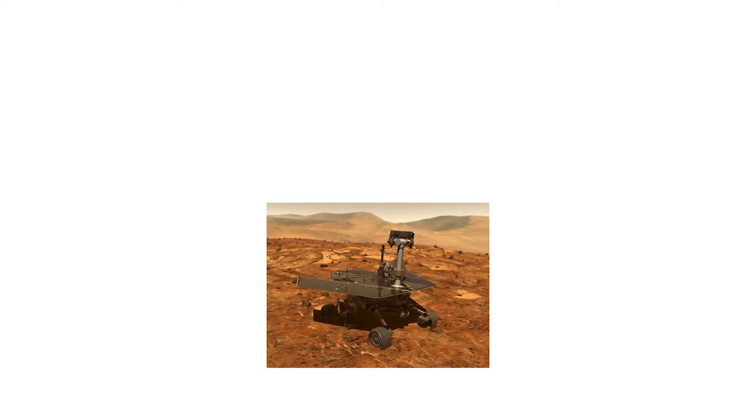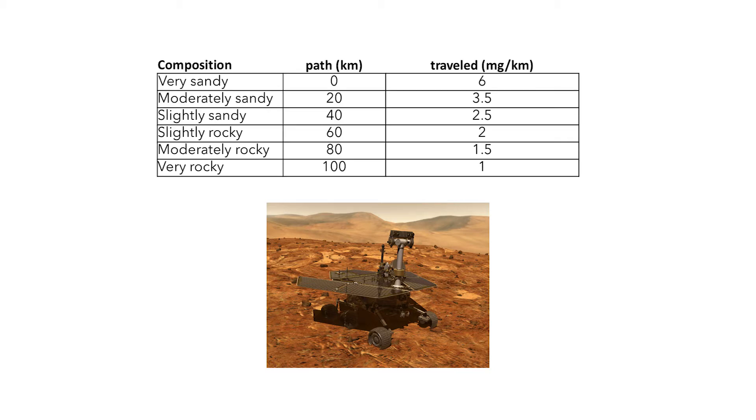In this video, you will see Julian and Alyssa working on the following problem. The Mars rover is traveling along the Martian surface. The table below shows the rate at which dust accumulates on its solar panels for various points along the 100-kilometer path it travels. How much dust will it accumulate?